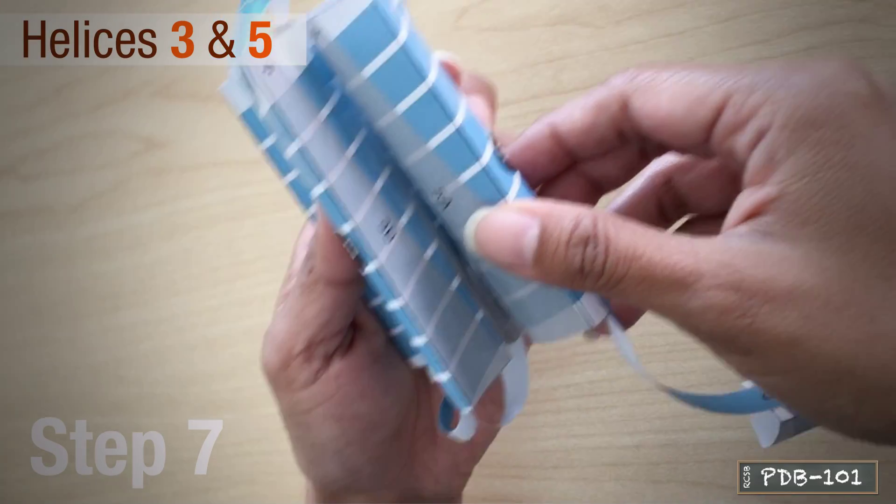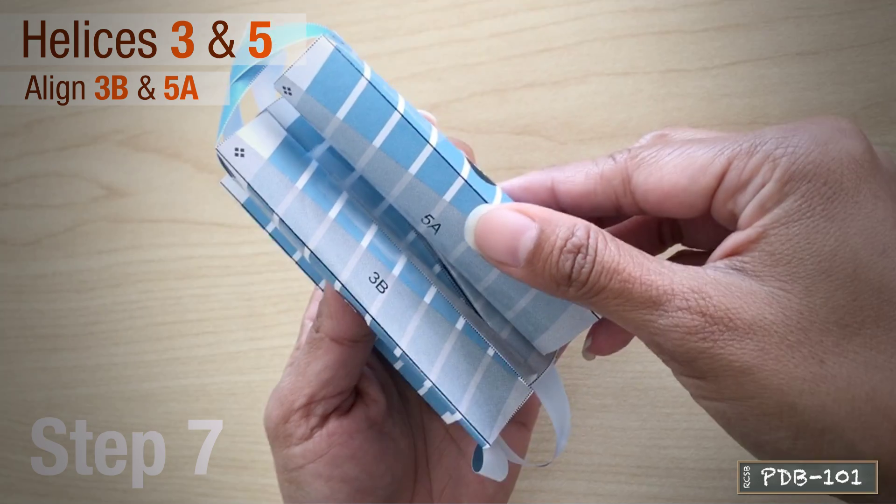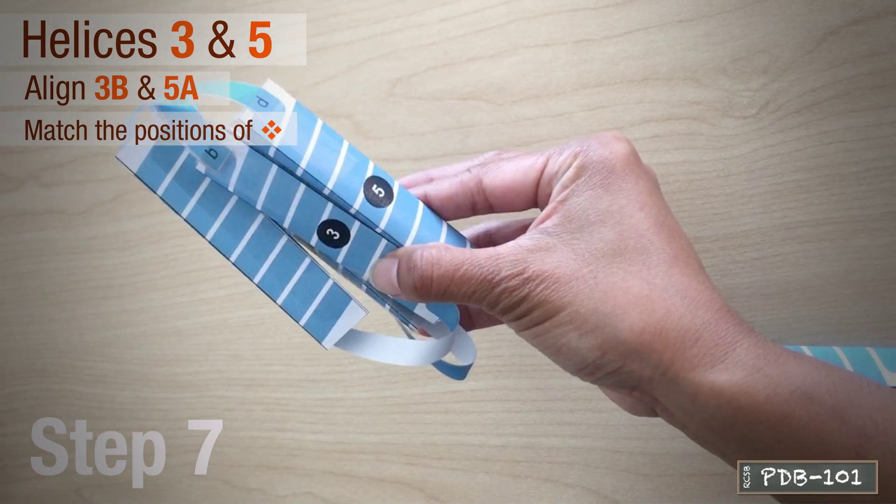Connect helices 3 and 5 by aligning area 3B to 5A, matching the position of the symbol with 4 diamonds.